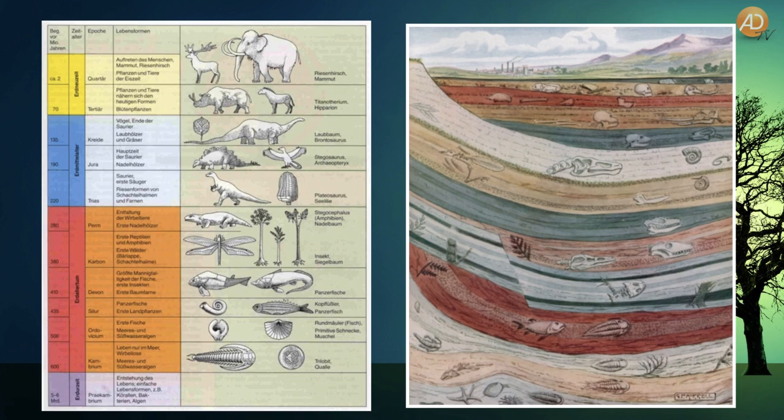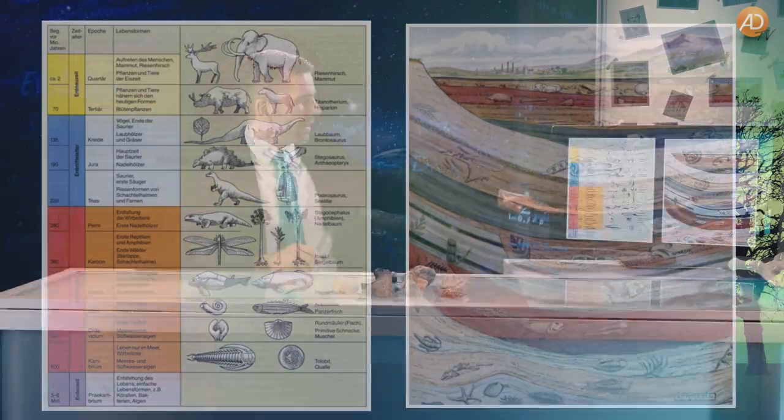Zunächst schauen wir uns mal die sogenannte geologische Säule an. Die geologische Säule ist das, was wir oft in wissenschaftlichen Büchern oder auch in Schulbüchern finden – also die Abhandlung der Erdzeitalter und die in diesen Erdschichten gefundenen Lebewesen. Wir beginnen unten im Präkambrium und ab dem Kambrium taucht plötzlich die Fülle der Lebewesen auf.